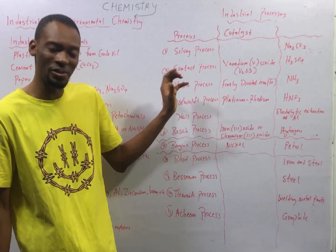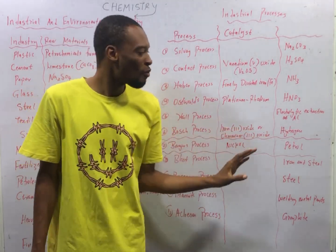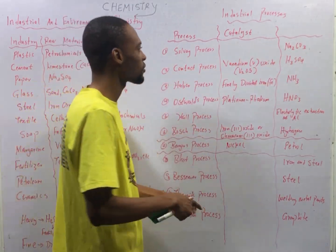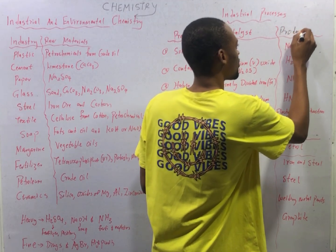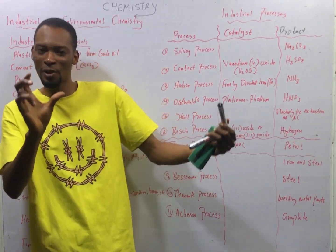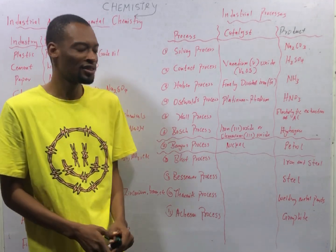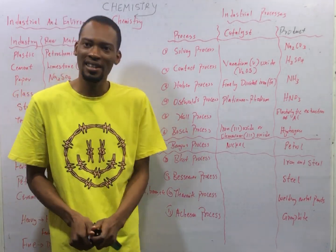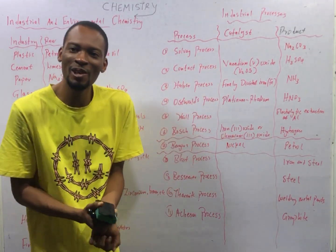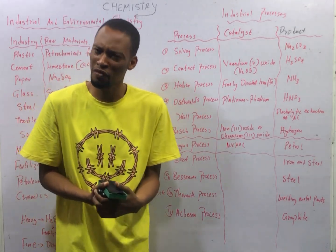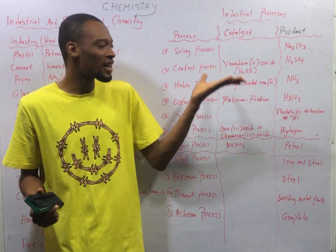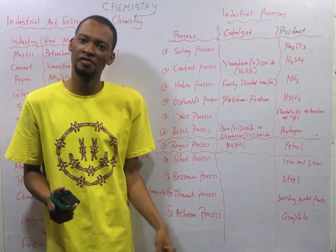The industrial processes are a very interesting topic and exam questions come under this. What you basically need to know here is the processes, the products formed, and the catalysts used. The Solvay process is the industrial process used to make sodium carbonate (Na₂CO₃). The Contact process is the industrial process used to make H₂SO₄ (sulfuric acid), and the catalyst used is vanadium pentoxide (V₂O₅).